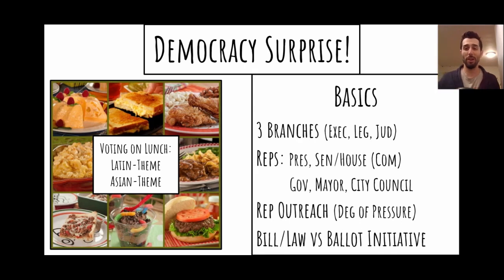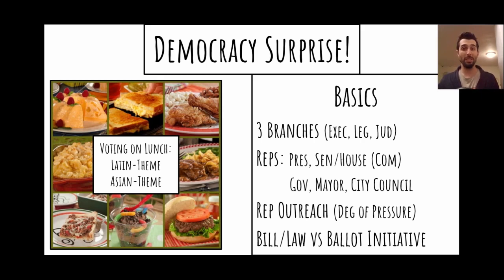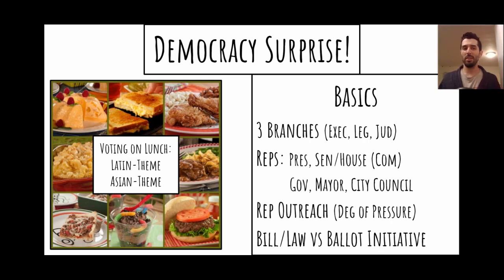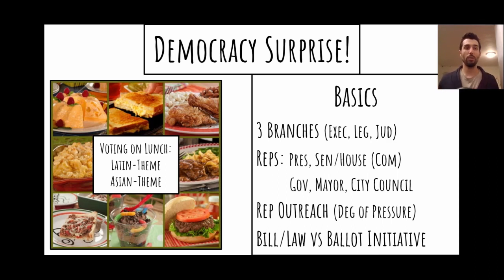Then we explain the bare basics of U.S. government and politics and the structure of how things work. There are three branches in the U.S. government: the executive, the legislative, and the judicial. Most people in the United States have federal representatives — the president, senators, and house representatives. What's really important about the senators and house reps is that they are on committees. The committees are important because a bill gets introduced through a committee, not just by an individual, through the relevant committee that introduces a bill to then maybe become law. I like to emphasize that because committees don't get a lot of attention in this conversation.